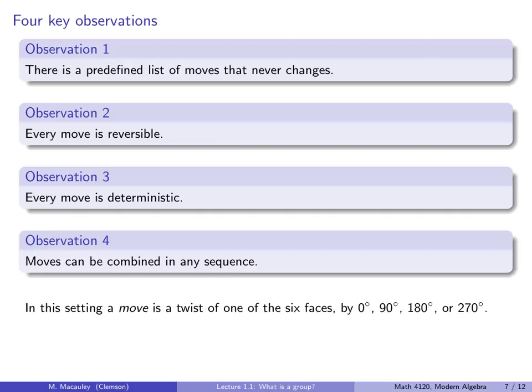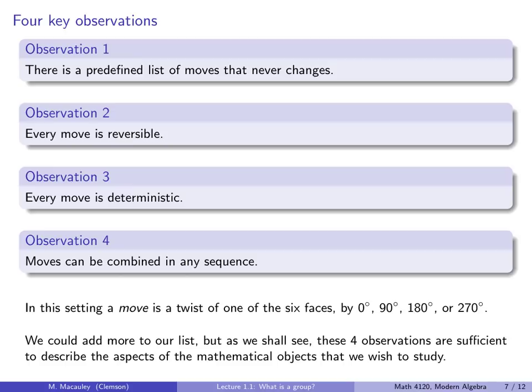So we could add more to our list. We could add more observations. We could add more moves. We could add a move of a twist of 540 degrees. But let's not do that, because we don't really need it. So as we shall see, these four observations are sufficient to describe the aspects of the mathematical objects that we wish to study.